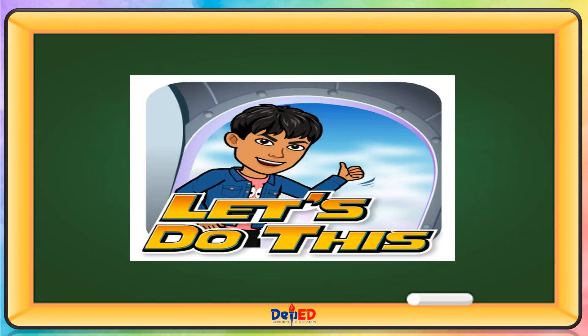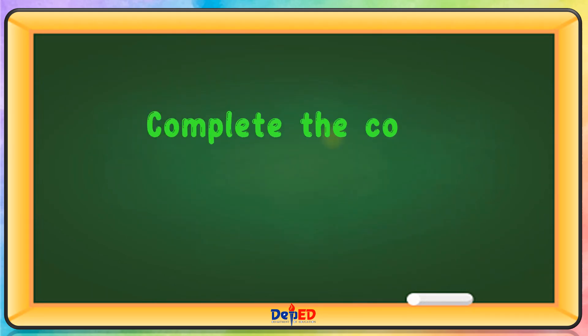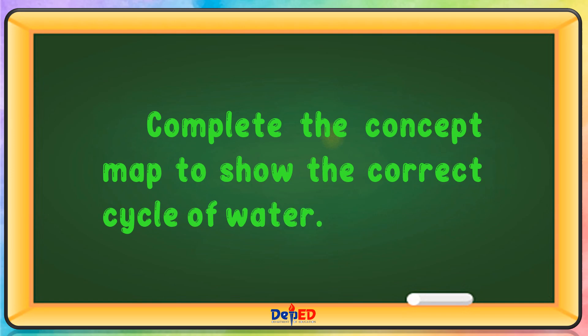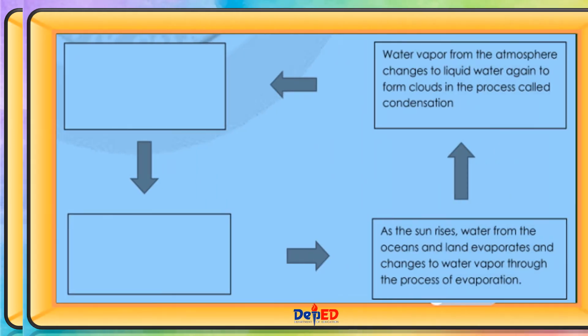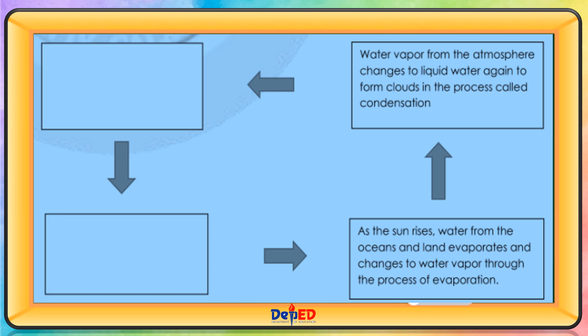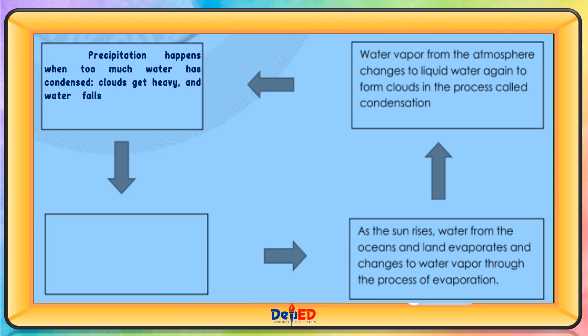Activity: Complete the concept map to show the correct cycle of water. As the sun rises, water from the oceans and land evaporates and changes to water vapor through evaporation. Water vapor from the atmosphere changes to liquid water again to form clouds in a process called condensation. Precipitation happens when too much water has condensed, clouds get heavy, and water falls as rain.